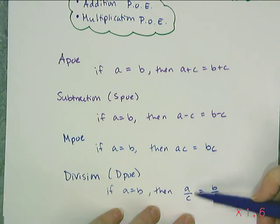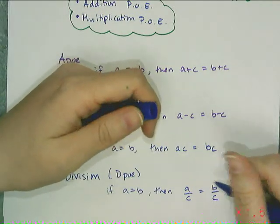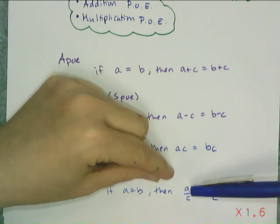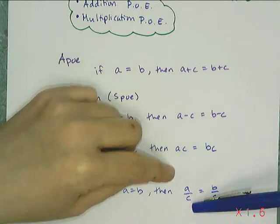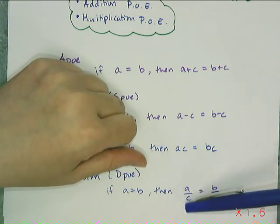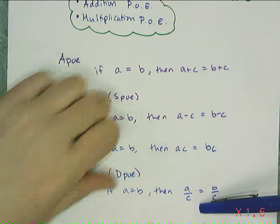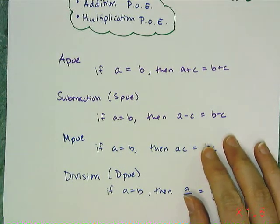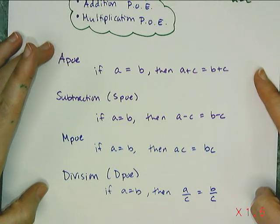And the reason why we write the division with the vinculum as opposed to with the division symbol, the obelisk, is because we need to emphasize that you're dividing the entire side of the equation by the same number. So if you have more than one term on one side of an equation, you have to divide the entire side out. So it's easy just to show that with the vinculum. So these are the four properties of equality that we're going to use to solve equations.